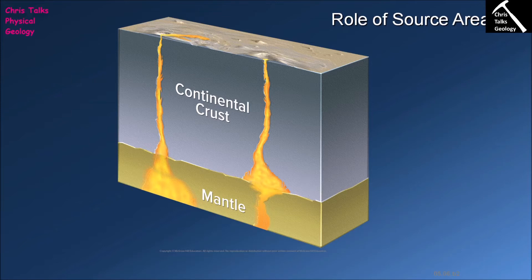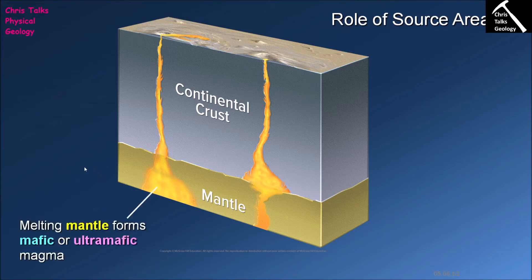Now we need to think about the role of the source area in forming our magma. In this diagram, we have two different areas of rock being melted to form magma: on the left, the melting of a mantle rock, and on the right, the melting of continental crust. So how does the source area affect the magma which we produce?